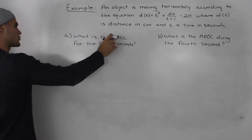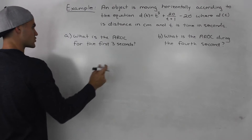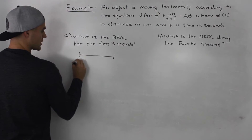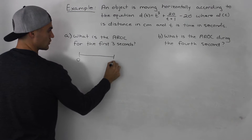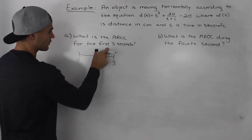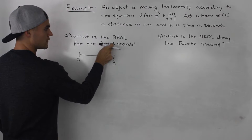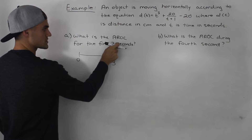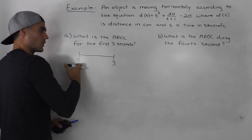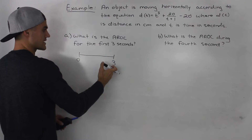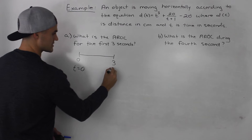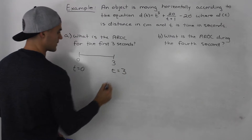What is the average rate of change for the first three seconds? That means they want the average rate of change from 0 to 3. Whenever they're asking for the first few seconds or minutes, it's always from 0 until that time. So we're dealing with t = 0 and t = 3.